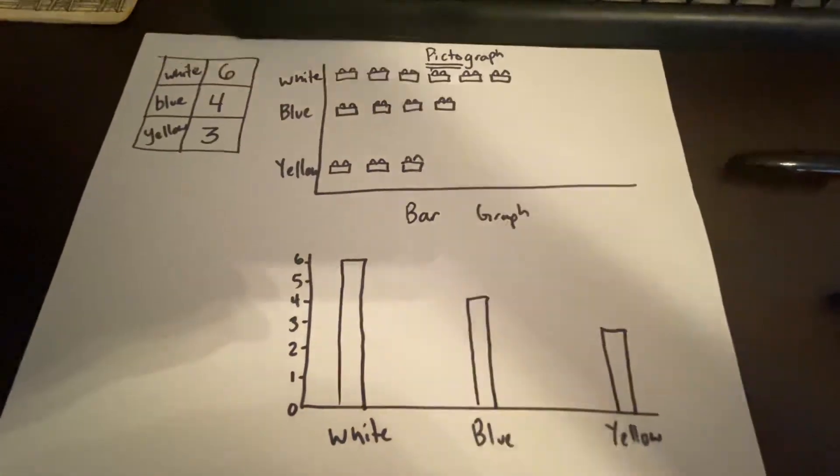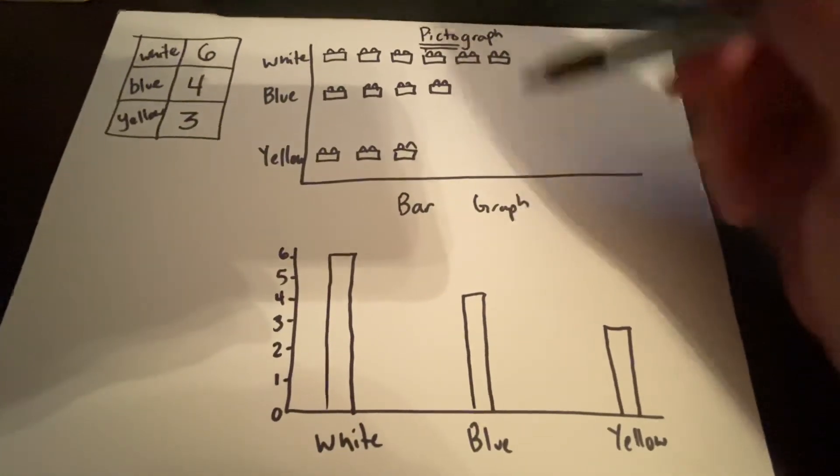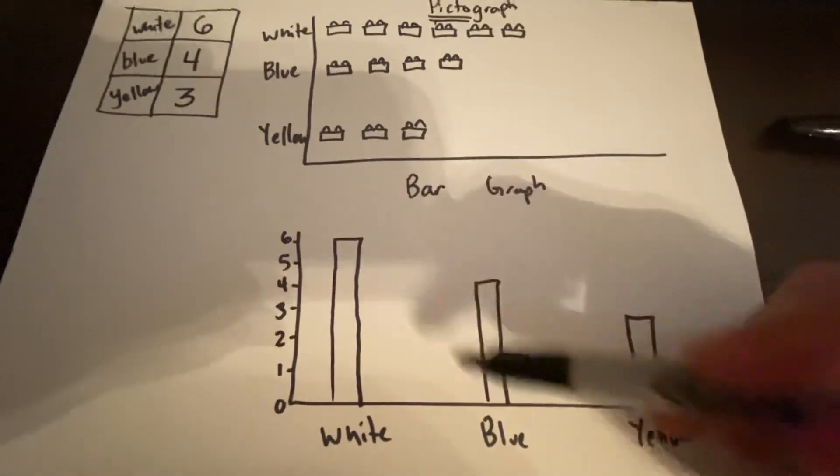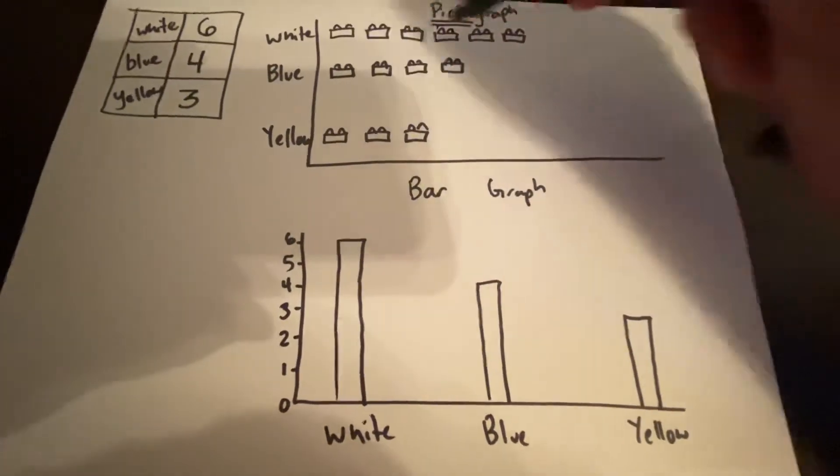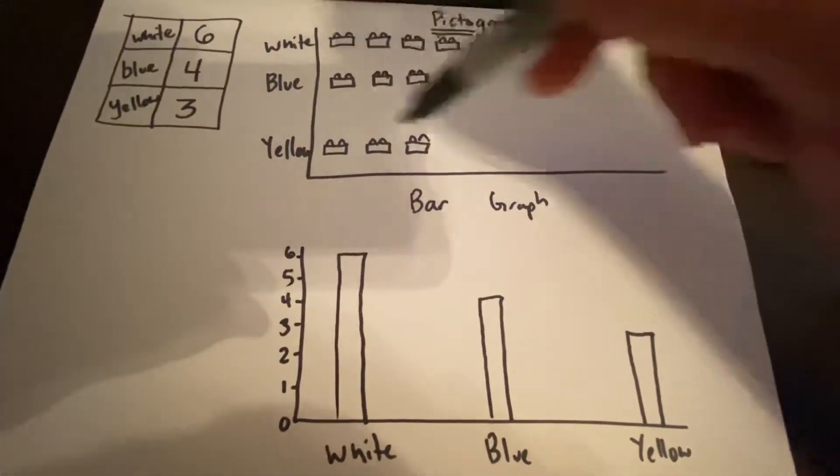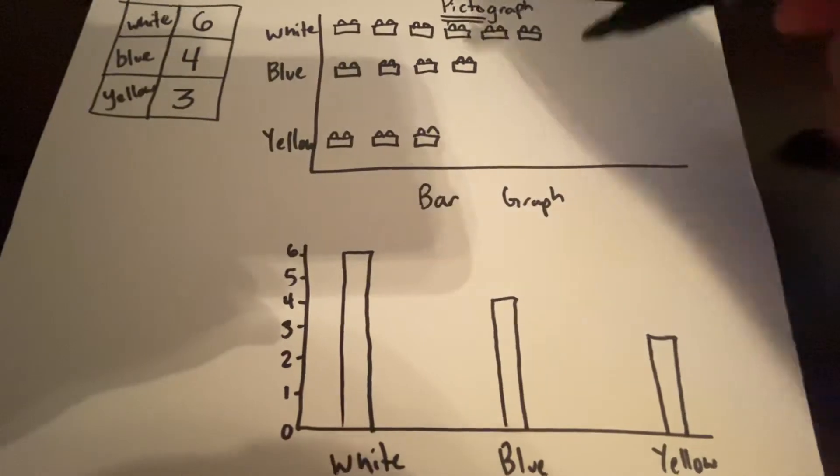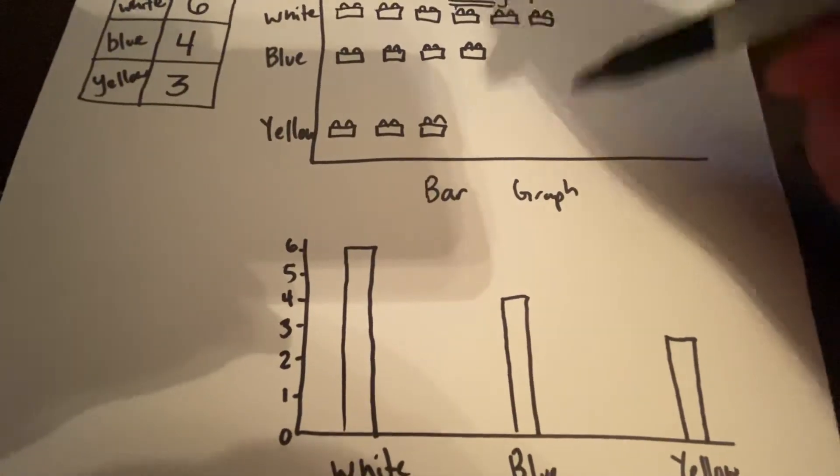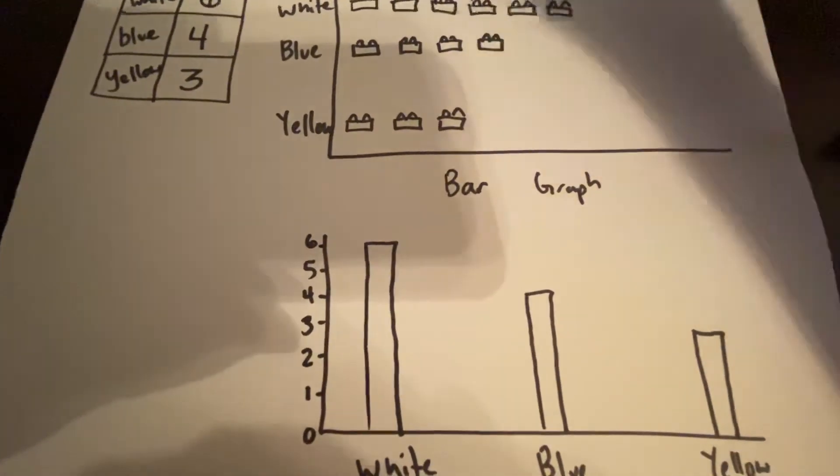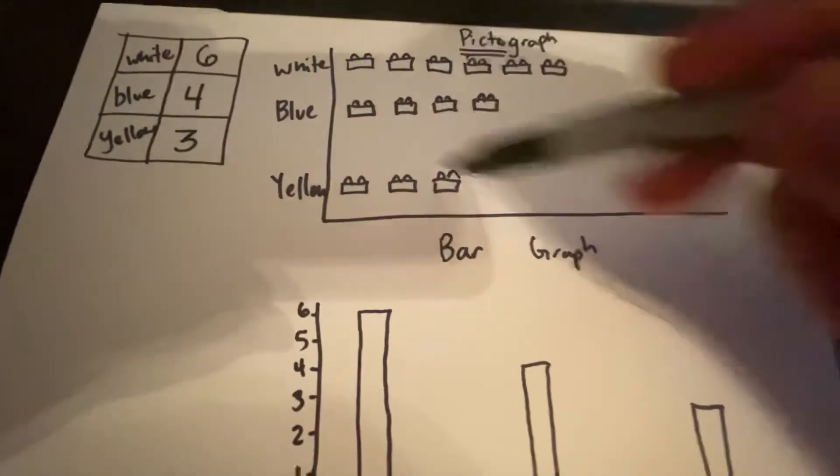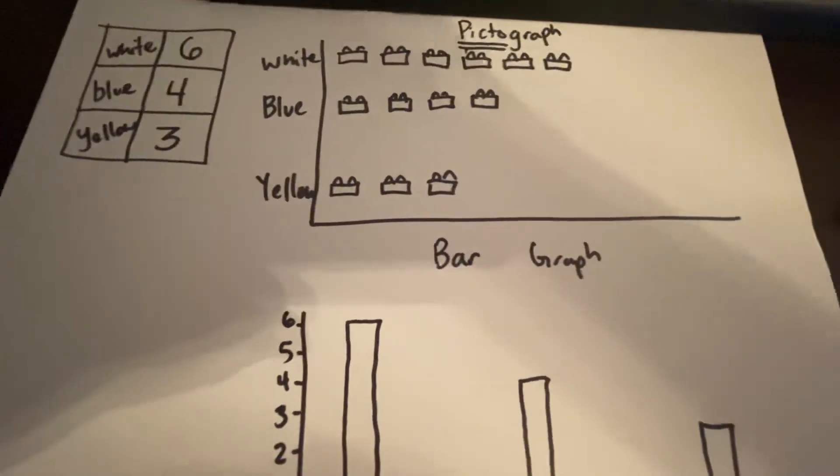So two different kinds of graphs that we have. Pictograph, bar graph. Pictograph shows pictures. Bar graph shows bars. The pictograph I made horizontal running left to right. I could have made my pictograph going up and down with my Lego stacked on top of each other. But normally when you see a pictograph, it is going to be vertical like that.